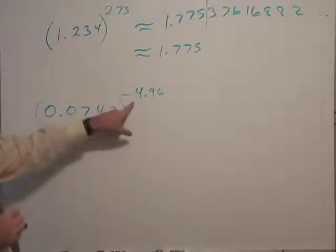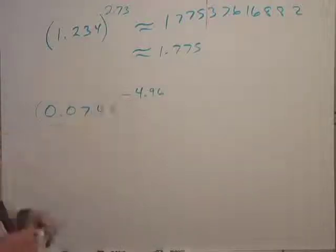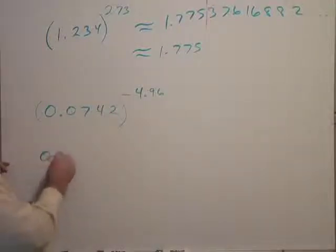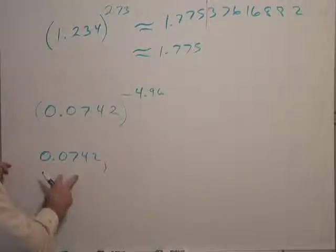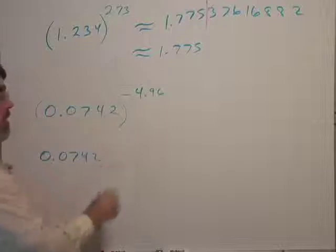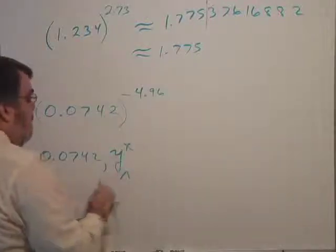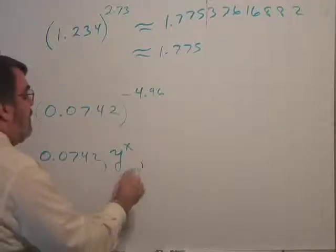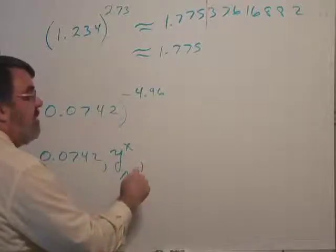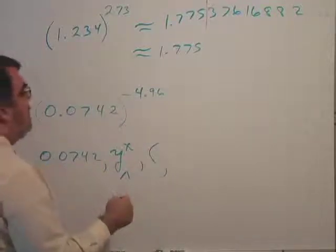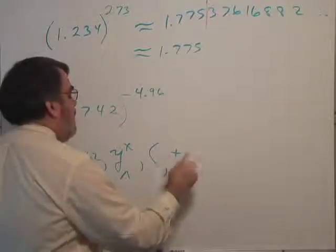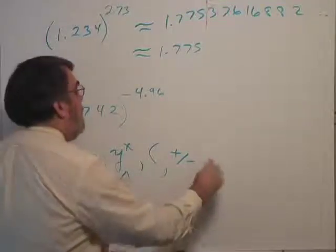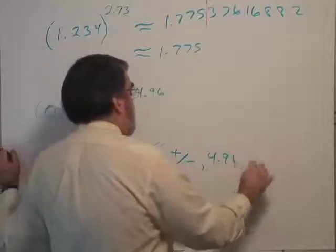Now, we could change that to positive exponent. It would be 1 divided by this number raised to the positive power. But we can just enter that in the calculator. And here it gets a little trickier. On my calculator, this is how I would do it. I would type in the base and hit the exponent key, which is either y to the x or the caret key. And then I would punch in, I think to be safe, I would put left parenthesis. That's probably not necessary, but left parenthesis. And then I hit the plus minus key. And then 4.96. Close the parenthesis and then hit equal.